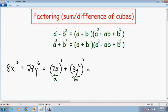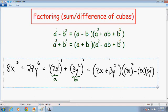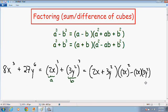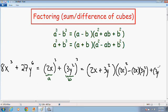So a cubed plus b cubed equals (a plus b) times (a squared minus a times b plus b squared). Our a is 2x and our b is 3y squared, so a plus b is (2x plus 3y squared). All multiplied by a squared — that is (2x) squared — minus a times b, which is 2x times 3y squared, plus b squared, which is (3y squared) squared.